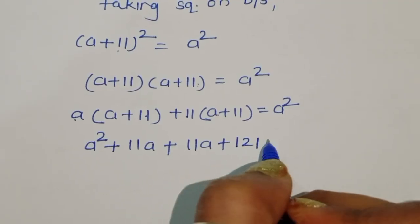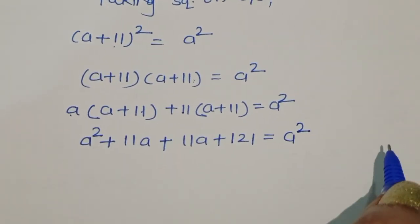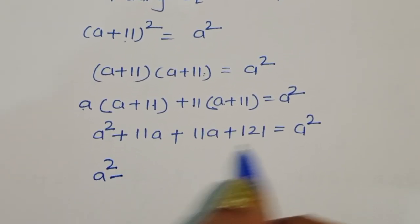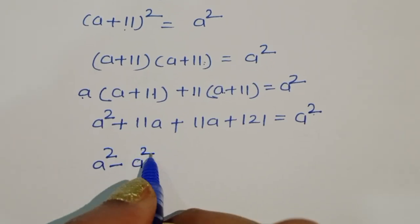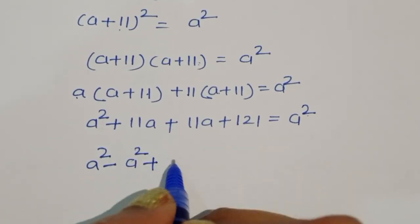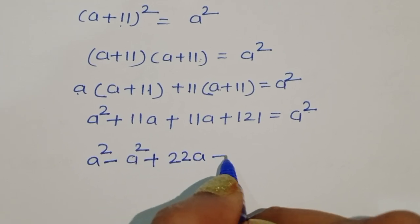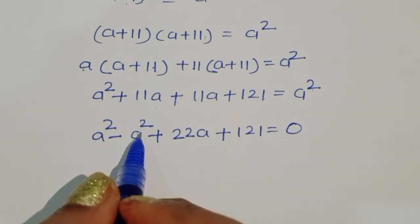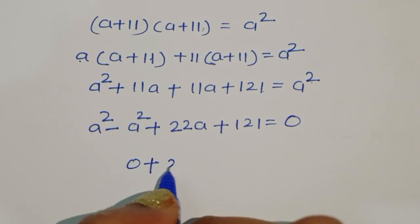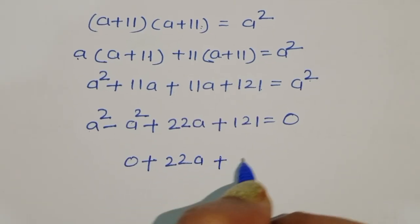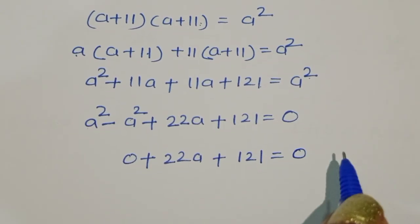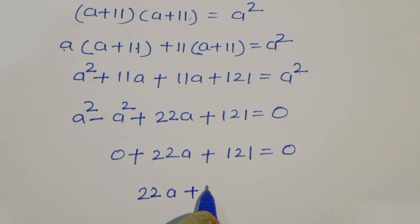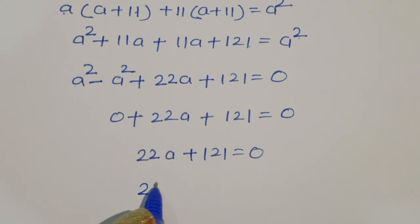So we get a² + 22a + 121 = a². Subtracting a² from both sides, it will become 22a + 121 = 0.